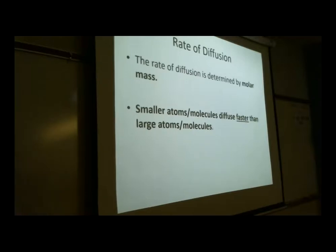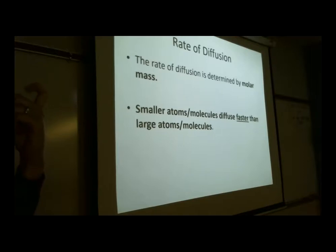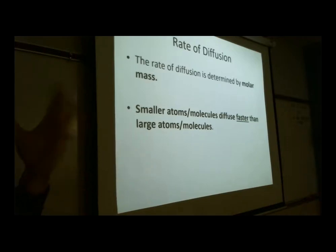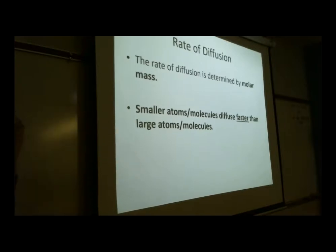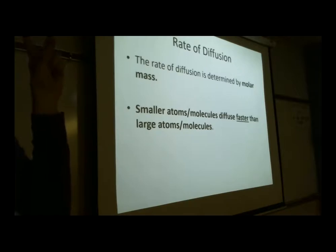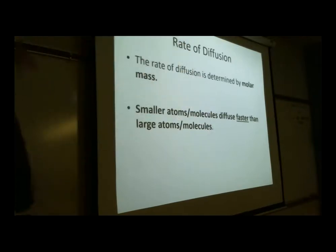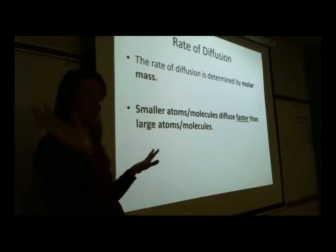If you're small, you'll diffuse faster than if you're large. Imagine spraying two air fresheners simultaneously — one smelling like pine trees, the other like vanilla frosting. If you smell pine trees first, that fragrance has the lower molar mass and is diffusing faster. This assumes equal volumes dispensed and uniform room temperature throughout.